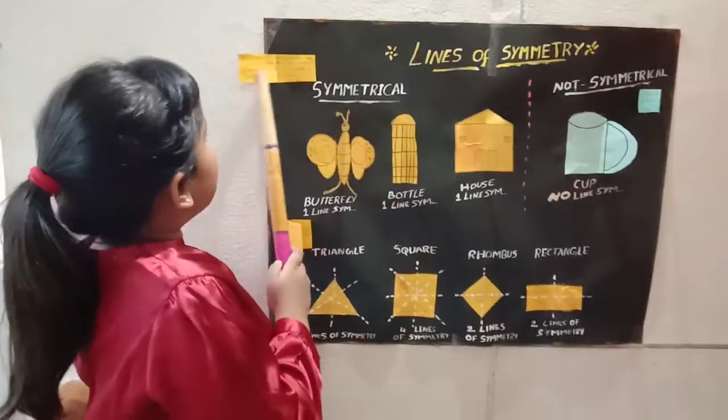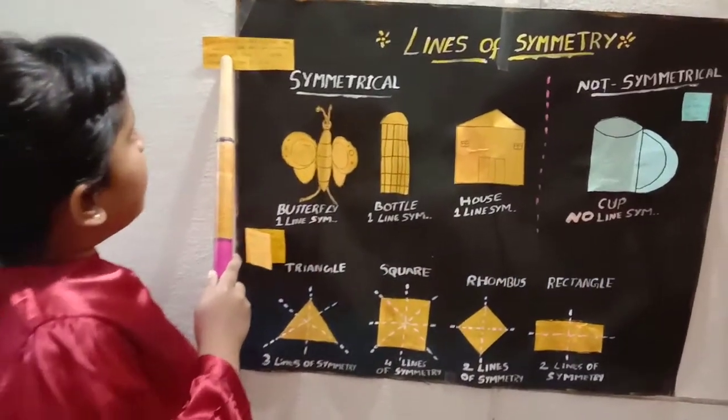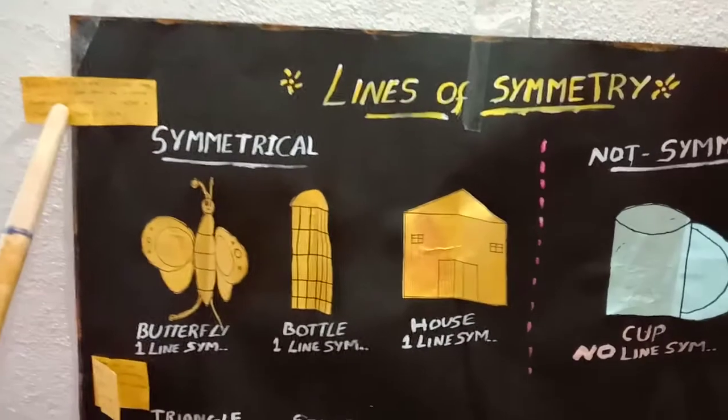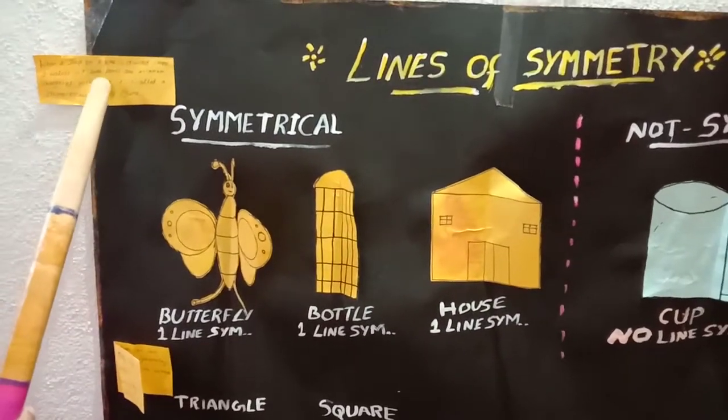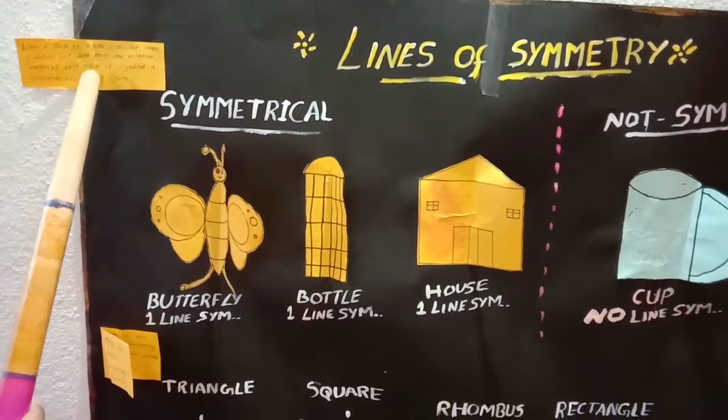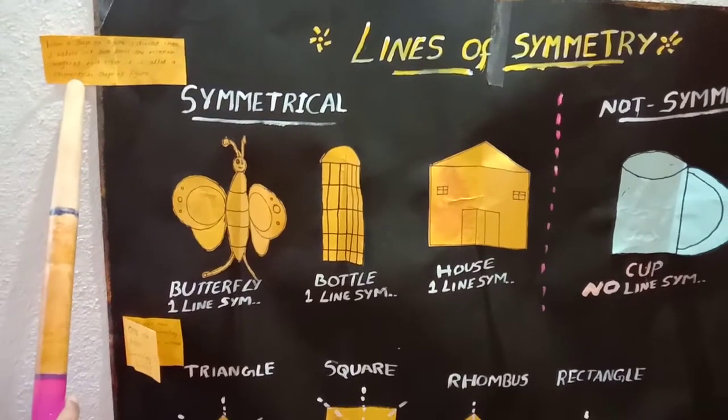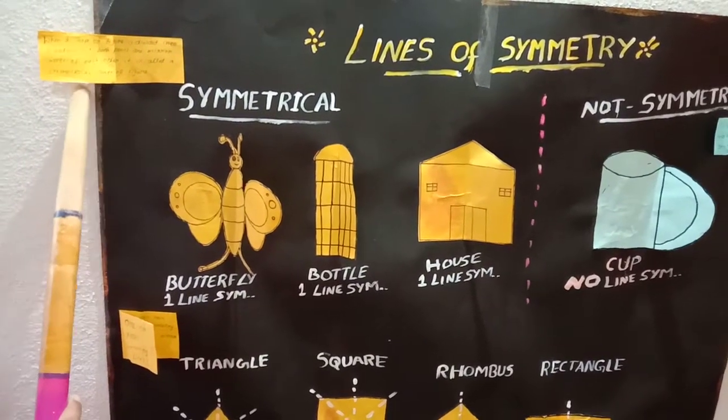What is a symmetrical shape? When a shape or figure is divided into two halves and both parts are mirror images of each other, it is called a symmetrical shape or figure.